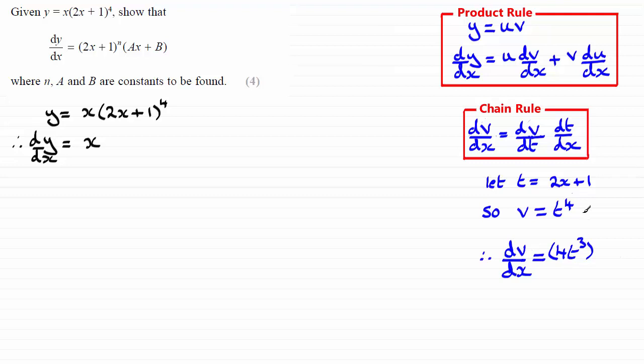And then I've got to multiply it by dt by dx. So, if I differentiate 2x plus 1 with respect to x, that's going to be 2. Now, I've broken that differential down for you here by using the chain rule.